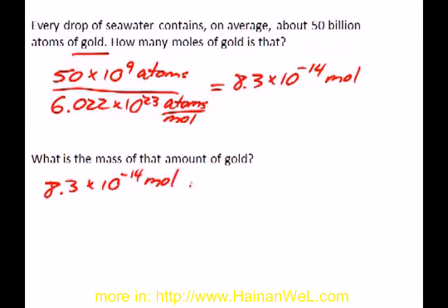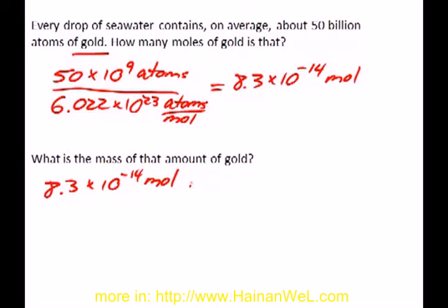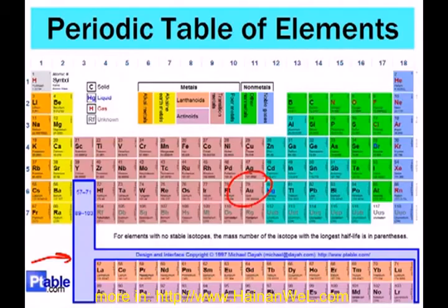In order to figure that out, we need to find the molar mass of gold. So, we go to our periodic table. Here we are. There's gold on the periodic table. Let's zoom in. Gold has a molar mass of 197 daltons per atom, or 197 grams per mole.